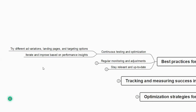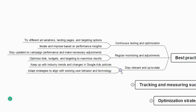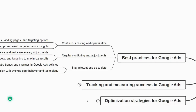The second best practice is regular monitoring and adjustments — stay updated on campaign performance and make necessary adjustments. You can optimize bids, budgets, and targeting to maximize results, for example increasing or decreasing a 500-rupee budget. Third is staying relevant and up-to-date — keep up with industry trends and changes in Google Ads policies, which are updated regularly. Adapt your strategies to align with evolving user behavior and technology.